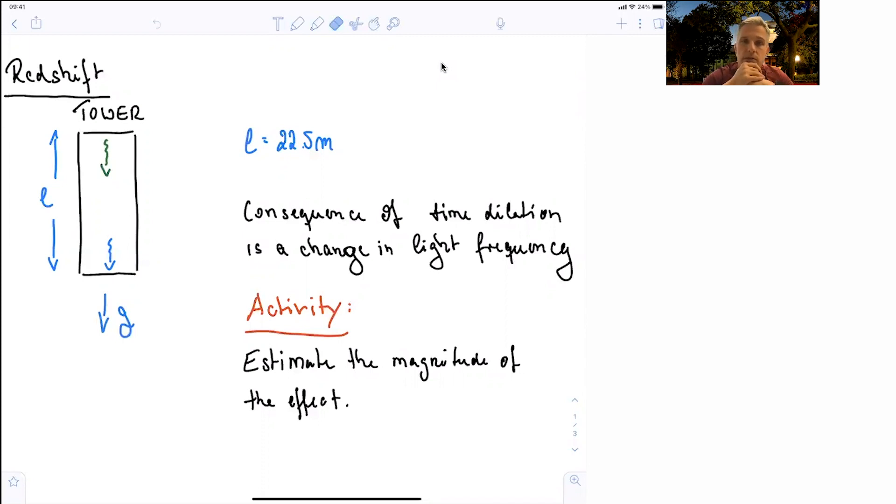You have a tower, 22 and a half meters tall, and a light beam is sent down. Obviously, the tower is built on this planet and gravity is acting.